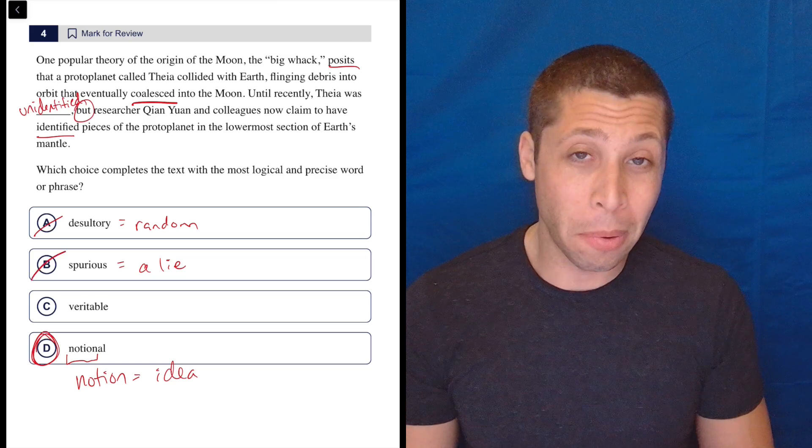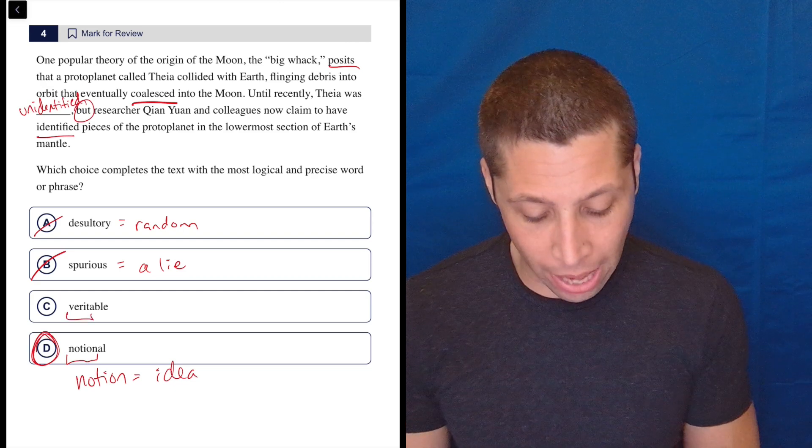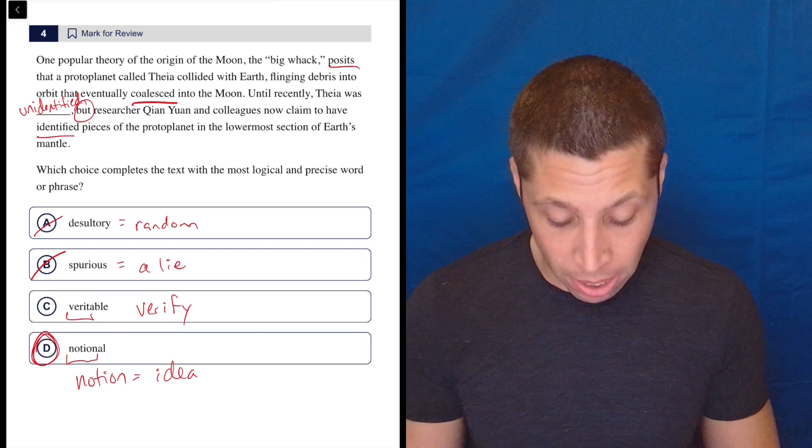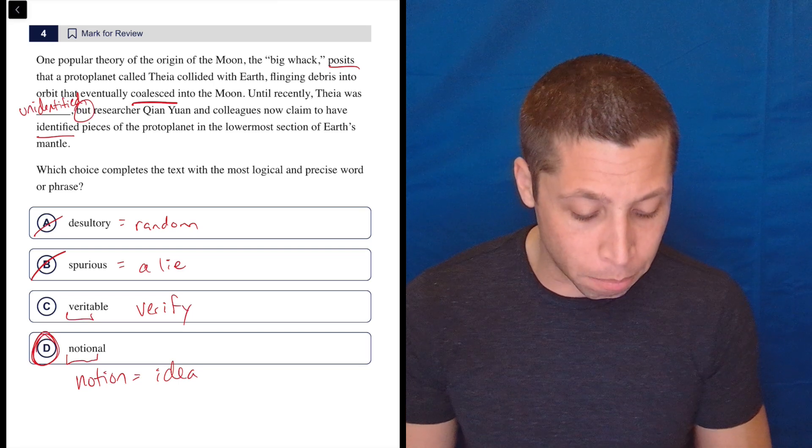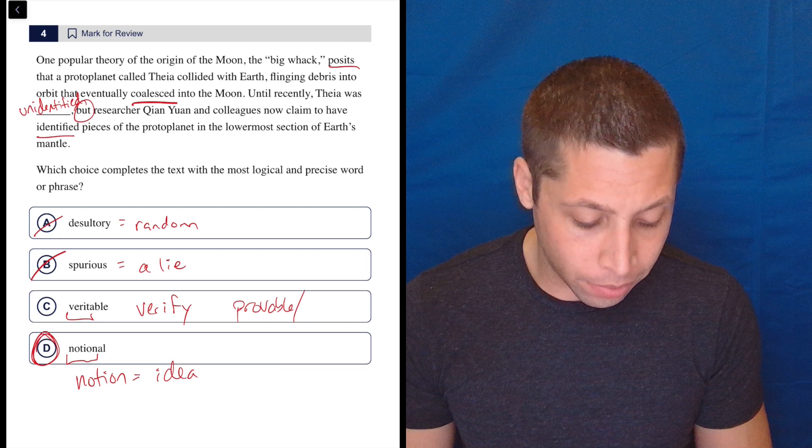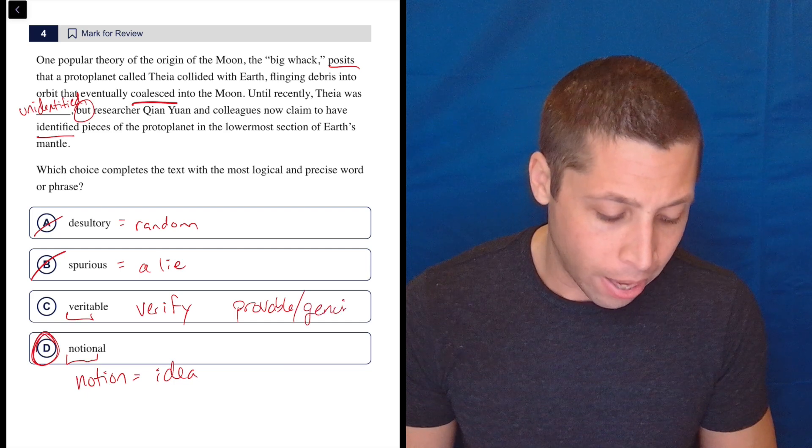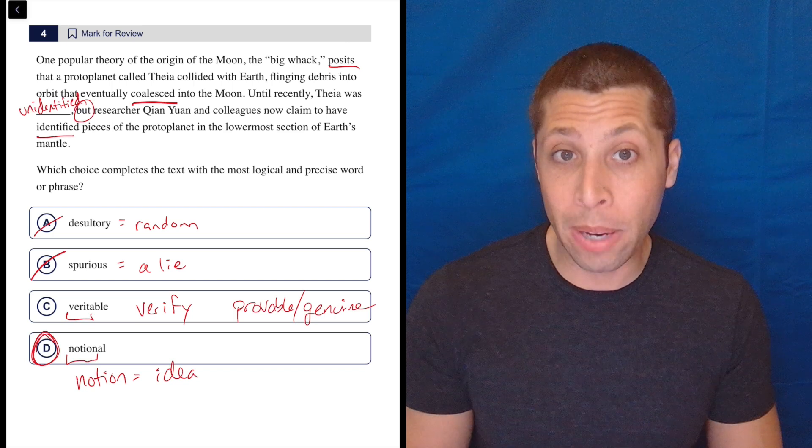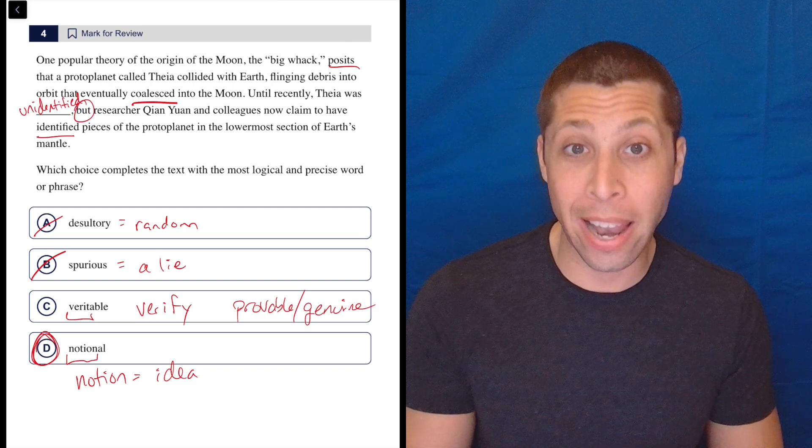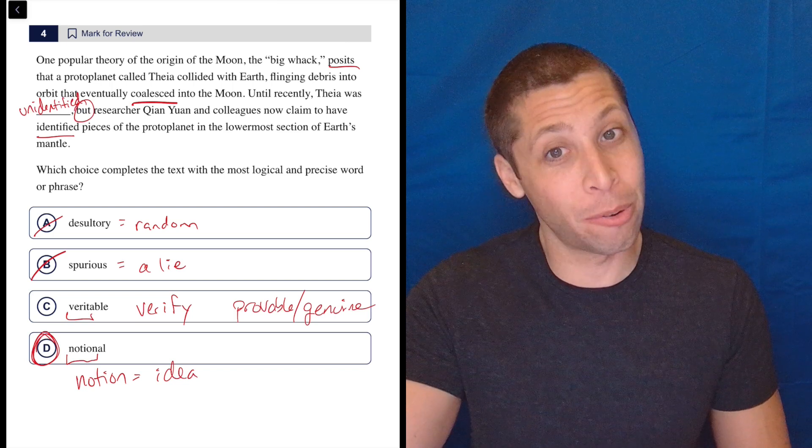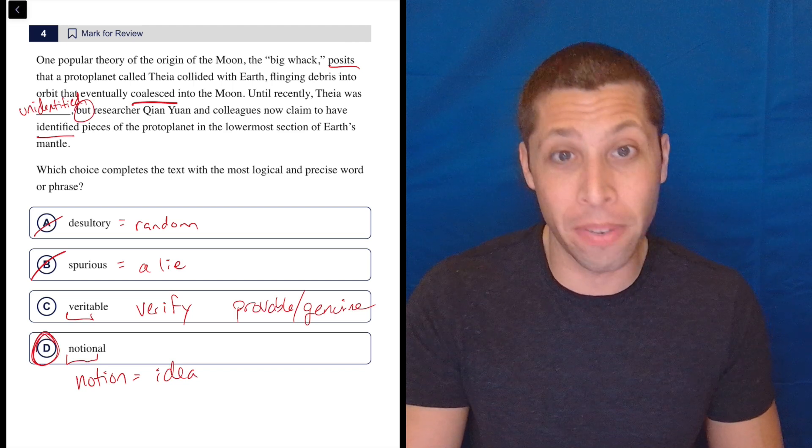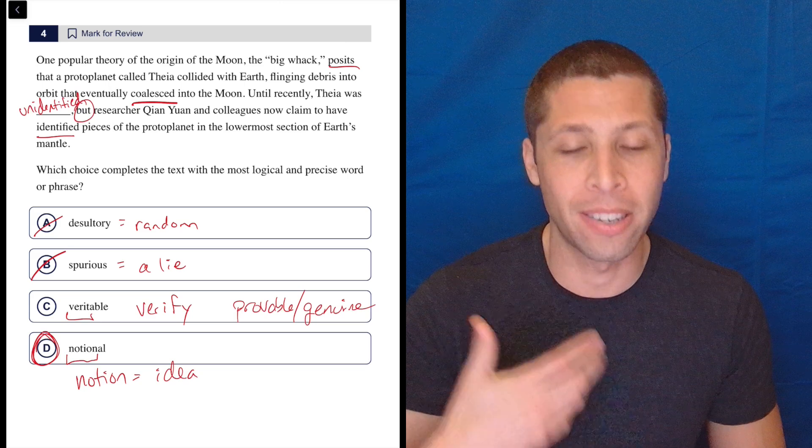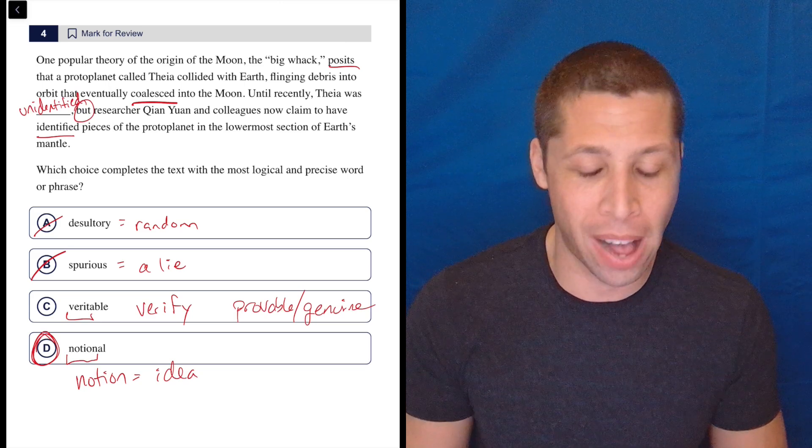And veritable, this is where maybe roots of words actually do help because veritable comes from the word verify, right, or that kind of same root, the idea of truth. So if something is veritable, it's provable or genuine. And so we don't want to say that yet, right, because we're contrasting. Now we might be able to identify it and have some provability there. But we're contrasting with that idea and saying before it wasn't veritable. We didn't know for sure that it existed. It was just an idea. It was just a hypothesis. But now we can verify it.